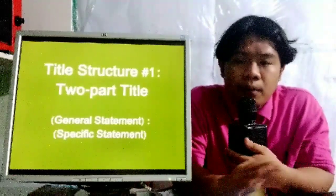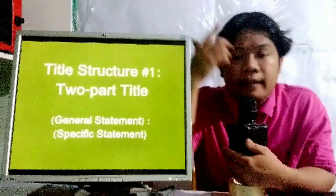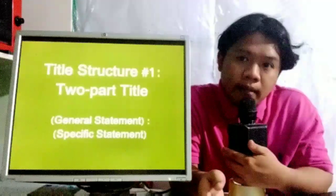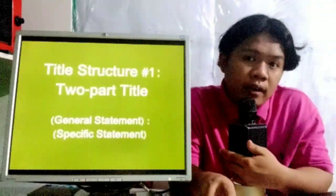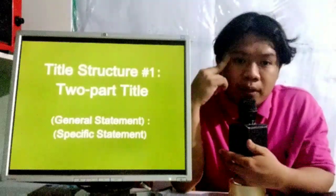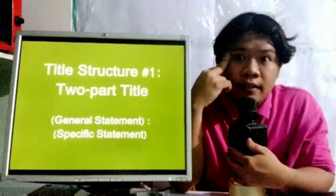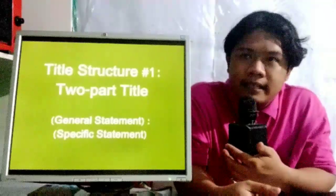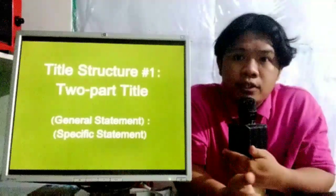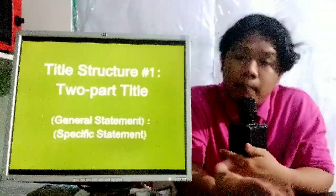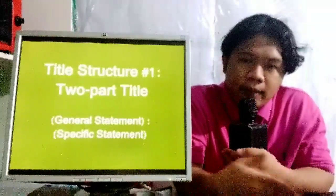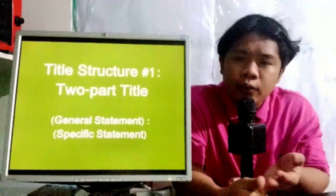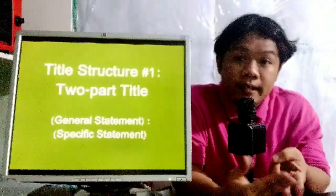One of the most often practiced formats is the two-part title. It consists of the following: first, you provide the general statement, then a colon, then you narrow down to the specific statement. For example, you plan to pursue the general statement 'Journalism as Practiced in the 21st Century,' and the specific statement could be the quality of writing — whether you want to assess the quality of outputs, the content, the number of readers, or those who practiced journalism. The two-part title basically utilizes a general statement and a specific statement.